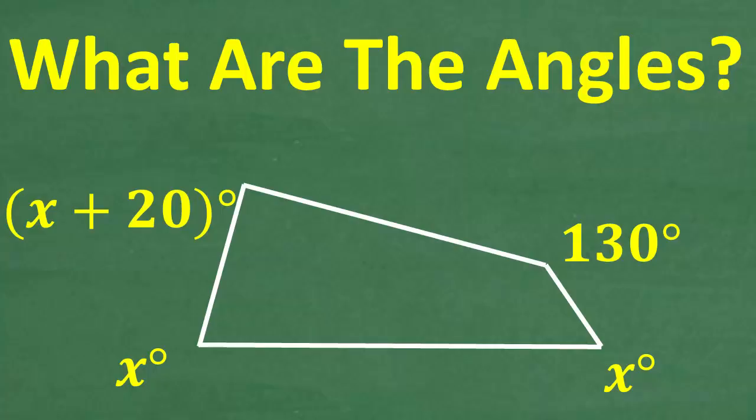The question here is find the angles of this quadrilateral. A quadrilateral is a four-sided polygon.